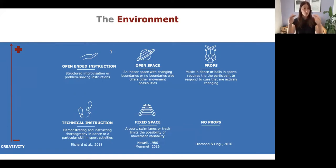Let's unpack the environment element. The top row is higher creativity, the bottom row is lower. First, open-ended instructions. Think of the second dance example we just went through, it's problem-solving instruction and structured improvisation. Technical instructions means demonstrating and instructing choreography in dance. We also have open space that can be indoor or outdoor, so you can explore the whole space as opposed to just staying on the spot. Fixed space can be a track, swim lane, or court. Finally, props can be music in dance or balls in sports, or no props at all.